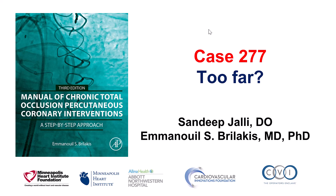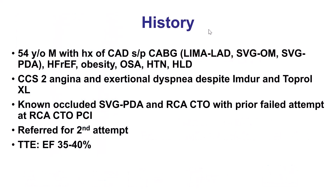Hi, this is Andeep Jali and Manos Berlakis, presenting case 277 for the Manual of CTO Interventions. This is a case that discusses some of the challenges deciding about how much to push when doing a complex CTO intervention. The patient was a young gentleman with previous coronary bypass graft surgery and significant angina that was sent for PCI of a right coronary artery CTO after a previous failed attempt.